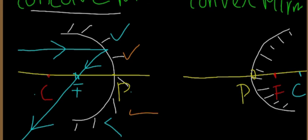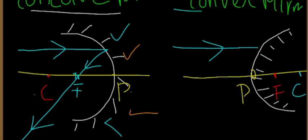Now I am going to show you the light ray on the convex mirror. The light travels parallel to the principal axis and hits the convex mirror surface. After reflection, the light ray diverges — it spreads outward — appearing to come from the focus behind the mirror. Light should diverge from the focus.